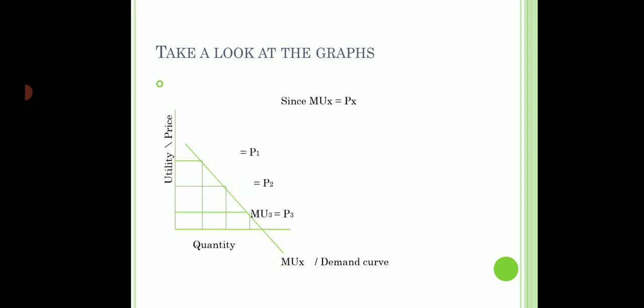So if I start removing the utilities from this curve, we can see this is how our demand curve looks like. The one change is that the MU curve touches the X-axis and goes negative, but the demand curve can never touch the X-axis or go negative because price can never be zero or negative. So basically, the marginal utility curve above the X-axis is the demand curve itself.